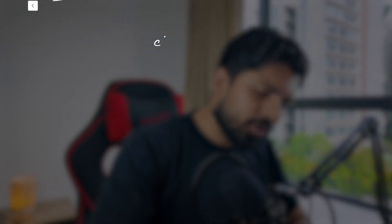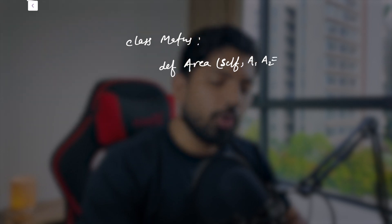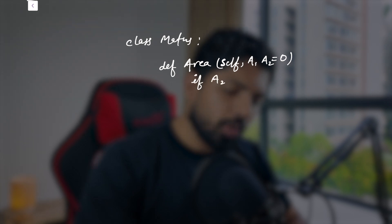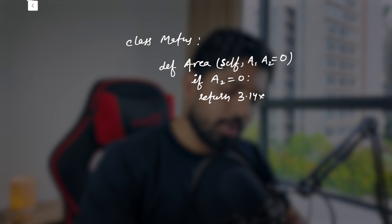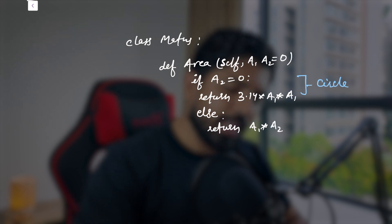To achieve method overloading in Python, we define a class Maths with a single method area that takes self, argument one, and argument two with a default value of zero. Using a conditional: if argument two equals zero, return 3.14 × a1 × a1 (area of circle); otherwise return a1 × a2 (area of rectangle). So by using default arguments we simulate method overloading, and we'll shortly see more examples.